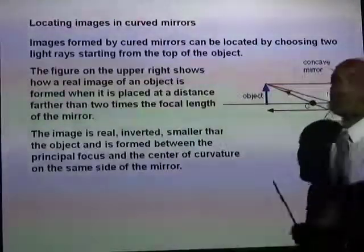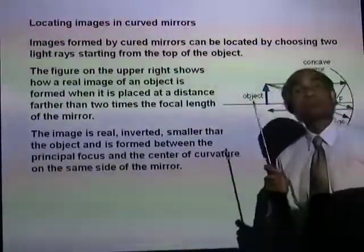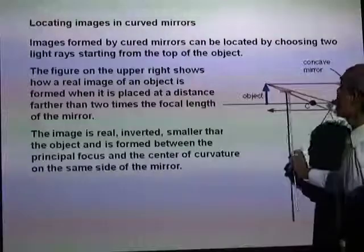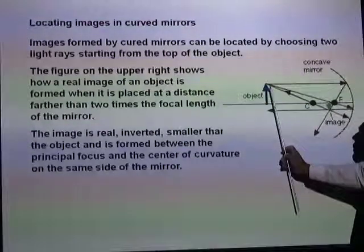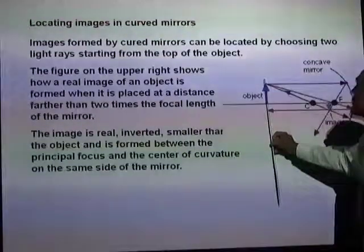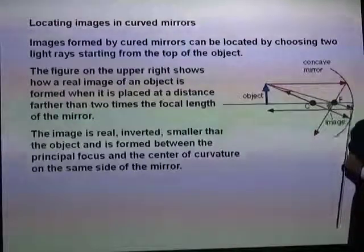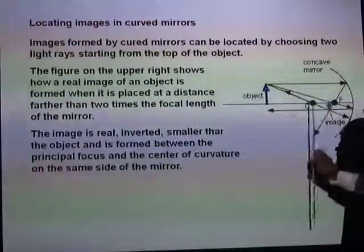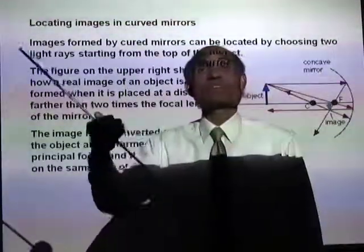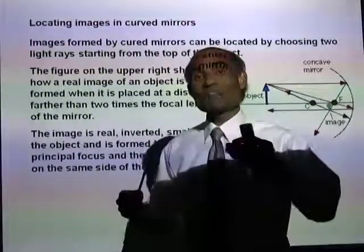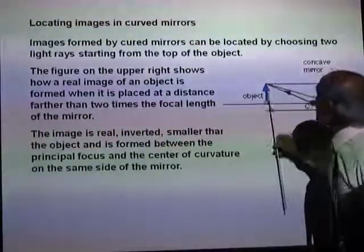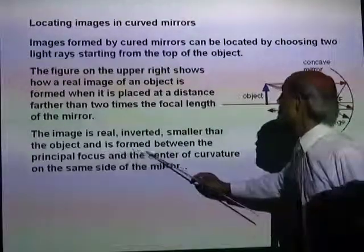Any of these two light rays will be enough to locate an image. The figure on the upper right shows how a real image of an object is formed when an object is placed at a distance farther than two times the focal length. The focal length and the radius of curvature are related so that the radius of curvature is approximately twice the focal length. So if you place an object beyond the center of curvature, it will be placed at a distance more than twice the focal length.